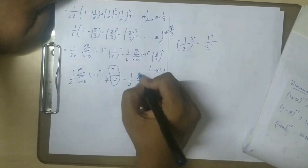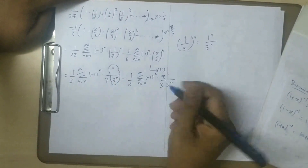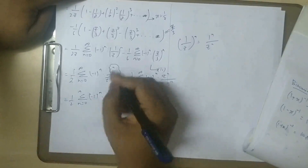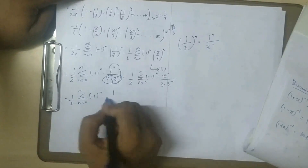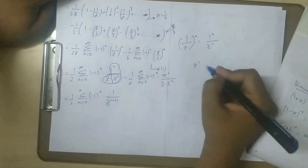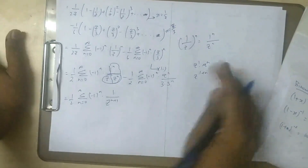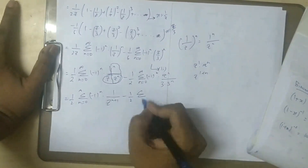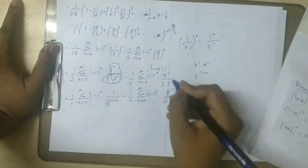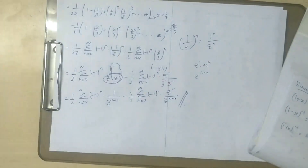Summation n equal to 0 to infinity minus 1 power n, into z power n by 3 into 3 power n. So 1 by 2 times summation n equal to 0 to infinity minus 1 to the power n: in one part 1 by z power n plus 1, and in the other part z power n by 3 power n plus 1. This is the answer for the second condition.